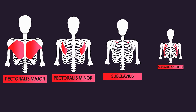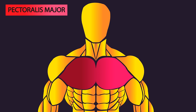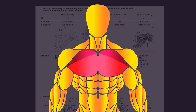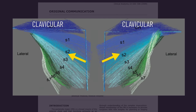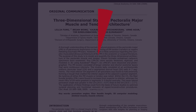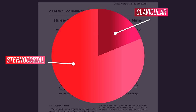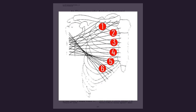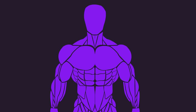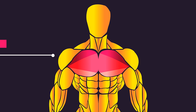A few muscles belong to the chest, but we're focusing on the largest and most important one for aesthetics: the pectoralis major. Anatomical analyses commonly consider the pectoralis major to have a clavicular and sternocostal head, with the sternocostal head divided up to as many as seven segments. The clavicular head makes up 19% of the pectoralis major volume, with the remaining 81% attributable to the sternocostal head. For simplicity, we'll consider three regions: the upper, middle, and lower pecs.